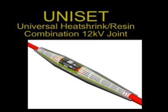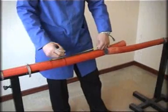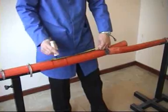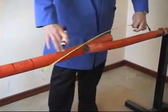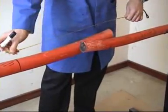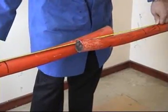Introducing the new UNISET universal heat shrink resin combination joint. We start off with the all-important cable preparation. Users should refer to the installation instruction sheet supplied with each kit.